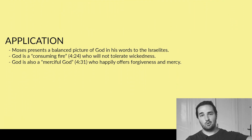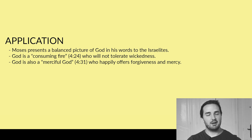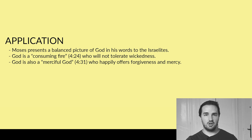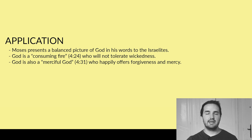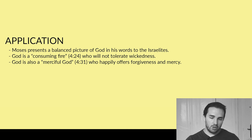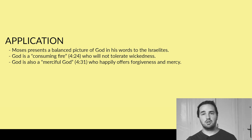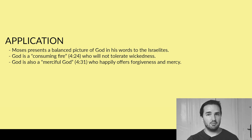Because our outline was so long, we've got a short application today. I think Moses does a really good job presenting a balanced picture of God in his words to the Israelites in these first couple of chapters. In chapter four, we see God as both a consuming fire who will not tolerate wickedness and who demands justice, but also as a merciful God — according to verse 31 — who happily offers forgiveness and mercy even to people who have betrayed him in the past.